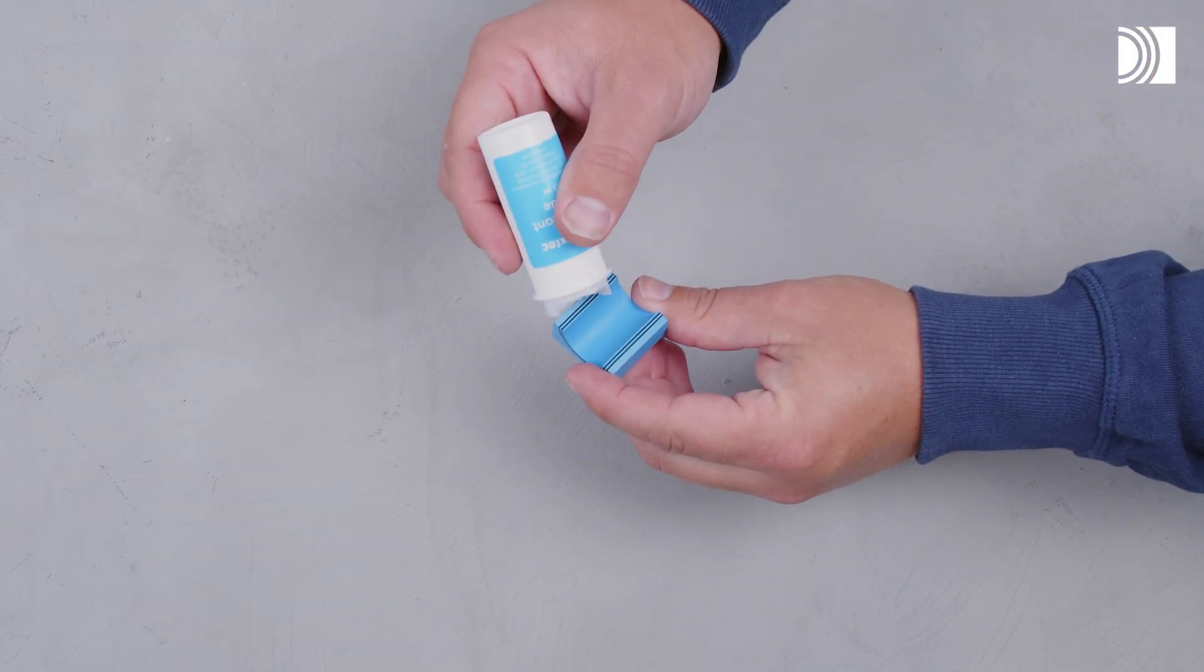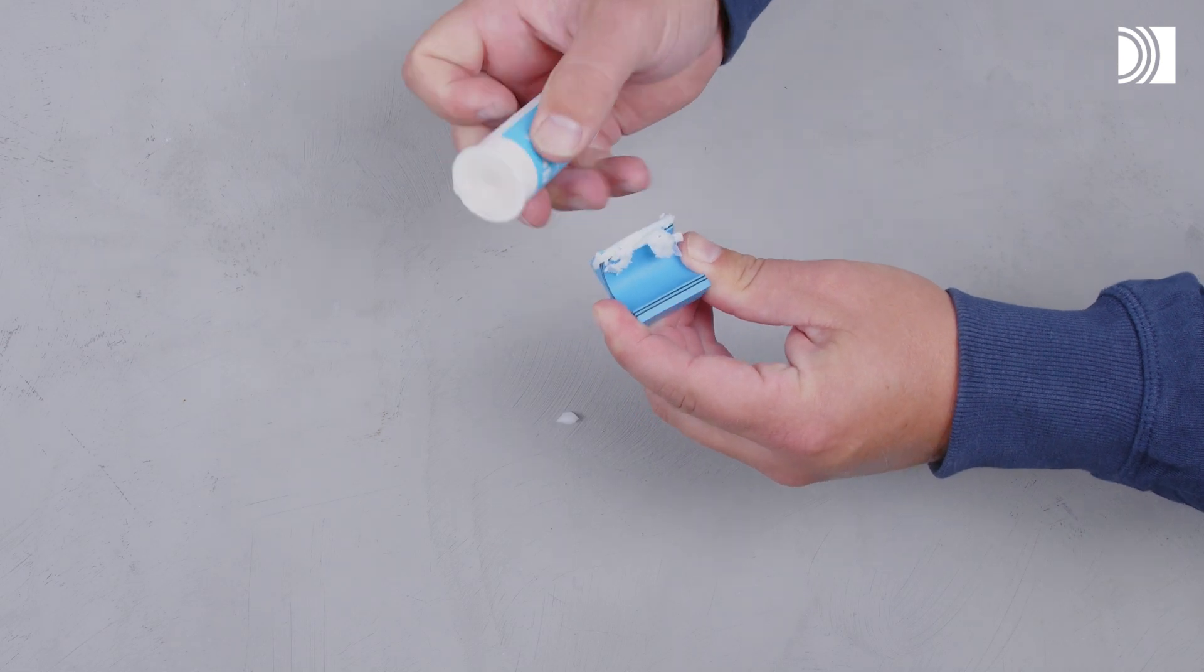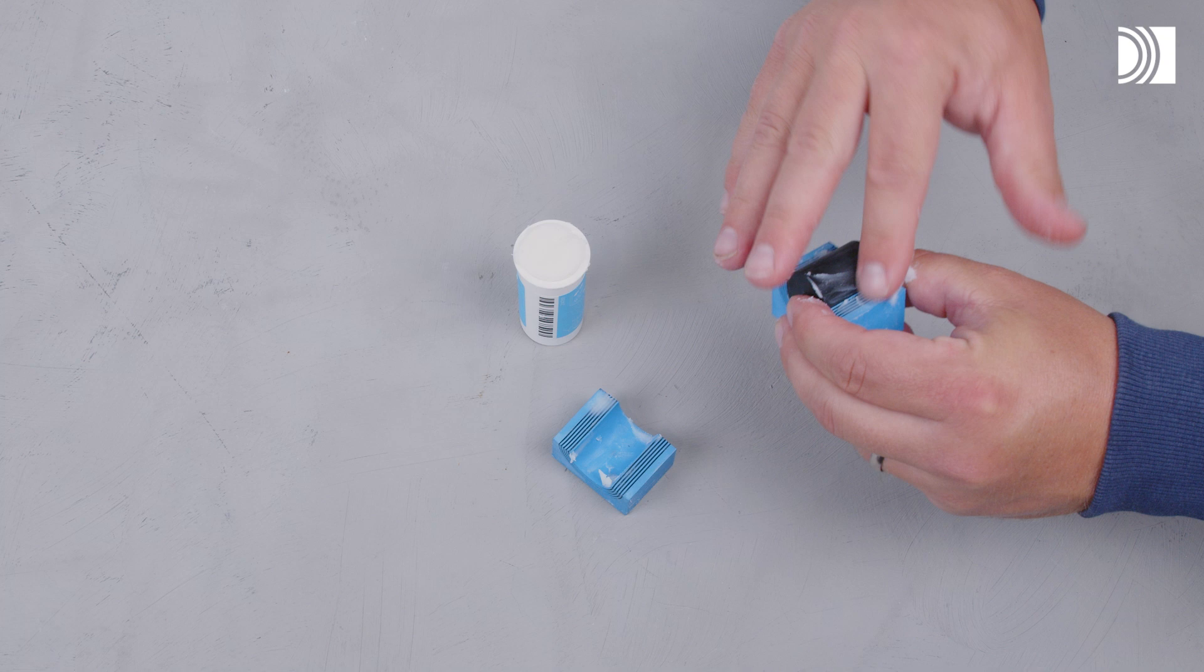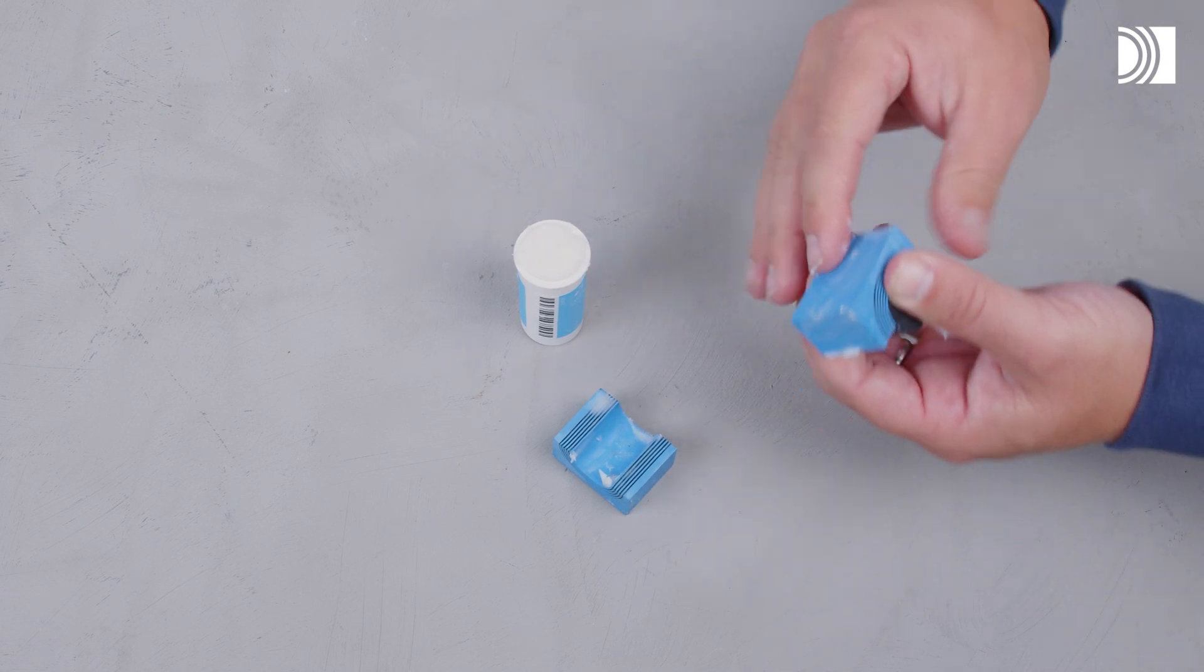Lubricate all sealing surfaces on the modules. Lubricate the sealing surfaces of the spare modules. Do not remove the core.